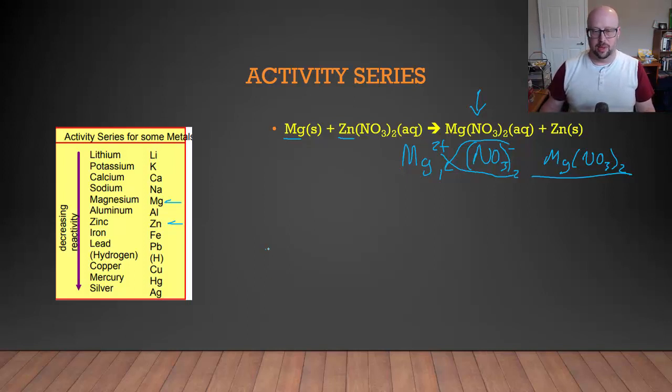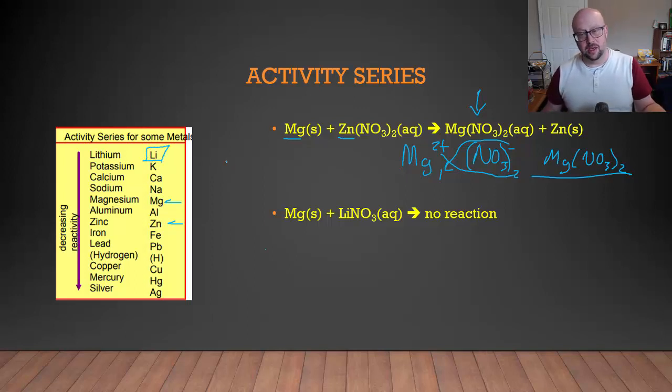So what's a case where maybe it does not? If we look at this case, we've got the same magnesium, but instead of trying to replace a zinc nitrate, we're putting it into a solution of lithium nitrate. And so when we look at the activity series here, what we see is lithium is pretty much at the tippity top here. In other words, nothing's really going to replace lithium in a single replacement reaction. And so what that means for us is we're not going to get a reaction. Magnesium can't switch places with lithium, and so we just write no reaction.